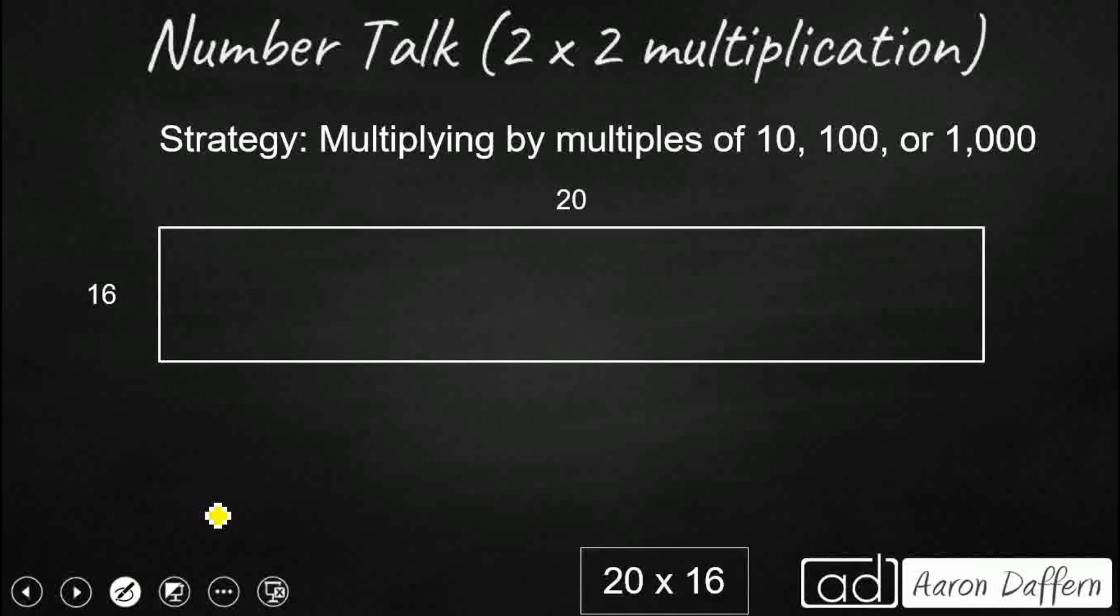So we could have started with multiplying by multiples of 10, 100, or 1,000. This is a fantastic strategy to use whenever you see anything. So our 20 here is a multiple of 10. Whenever we see these zeros, we know there are some shortcuts.